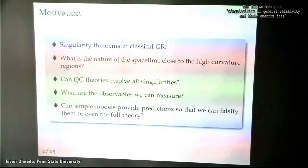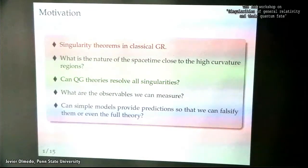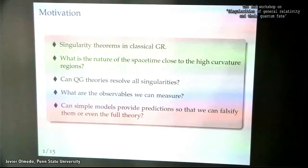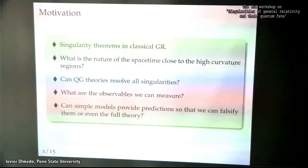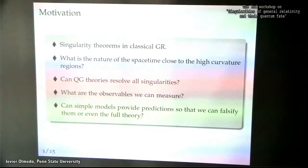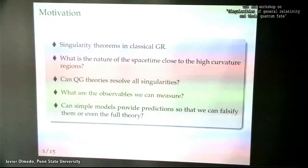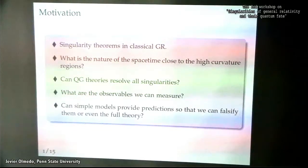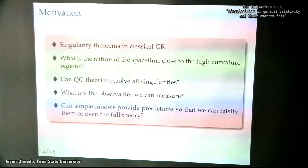Will these candidates be able to resolve all singularities we see in the classical theory? If not, at least which ones are going to be solved? Then, what kind of observables can we access related to the high-curvature regions — the quantum regions of these theories — especially if there are some windows for observations we can explore today, either in cosmology or black hole physics? And finally, since these proposals are very complicated, whether it is possible to build simpler models that allow us to extract predictions that could be compared with observations, or even to rule out these models or the full theories.